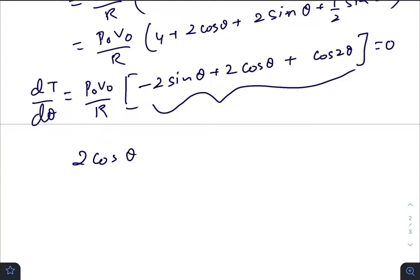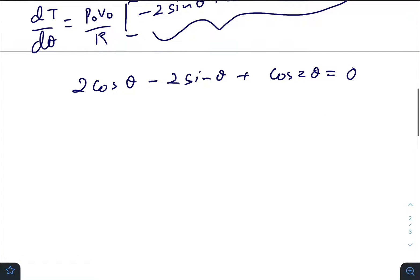For some value of theta this whole term will be zero. So let me write this down separately: 2 cos θ minus 2 sin θ plus cos 2θ. The two values of theta with which the temperature will be maximum or minimum, that means this equation will be valid. One value would be π by 4 and another one is 5π by 4. You can check it by yourself, you people are smart enough.